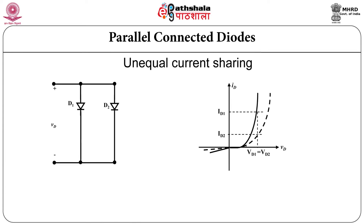If you see the parallel connection of diodes, it is not required for high voltage applications — it is required for high current applications. If diodes are not available for high current then you have to connect diodes in parallel. If you connect diodes directly in parallel then voltage across the diodes will be the same, but no two diodes will have exactly similar characteristics. Therefore there will be a difference between currents flowing through the two diodes, resulting in no equal current sharing.